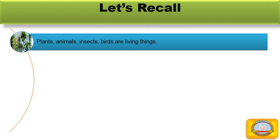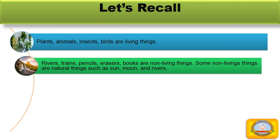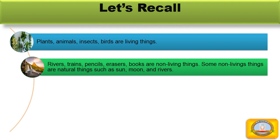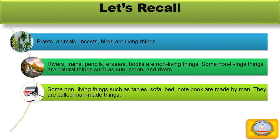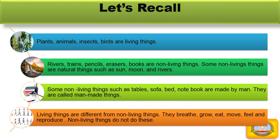Let's recall. In this video we learned that plants, animals, insects, and birds are living things. Rivers, trains, erasers, and books are non-living things. Some non-living things are natural, such as the sun, moon, and rivers. Others, such as tables, sofas, beds, and notebooks, are man-made. Living things breathe, grow, eat, move, feel, and reproduce.